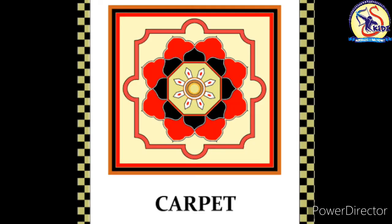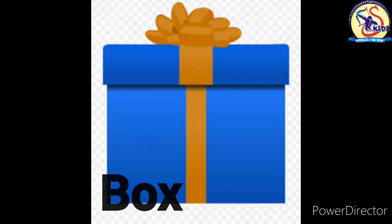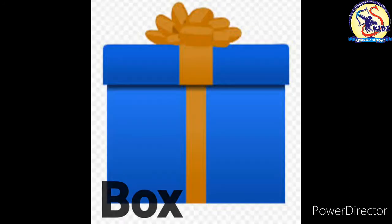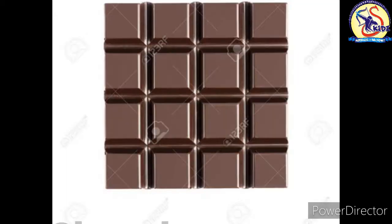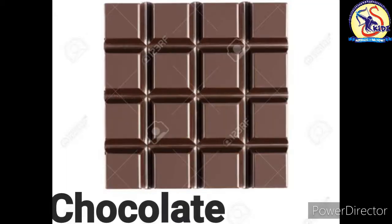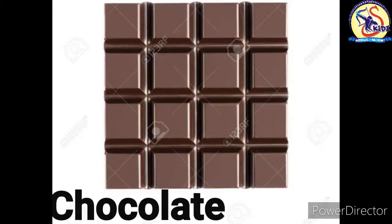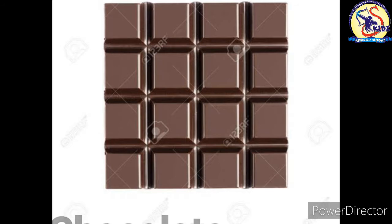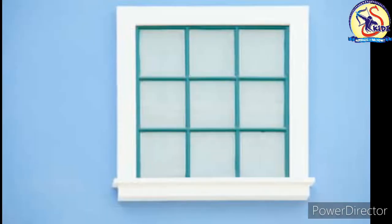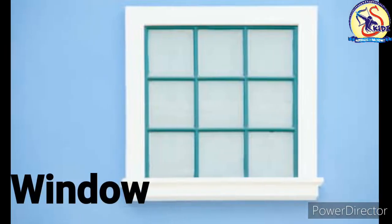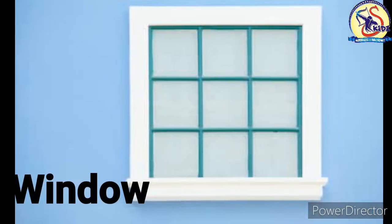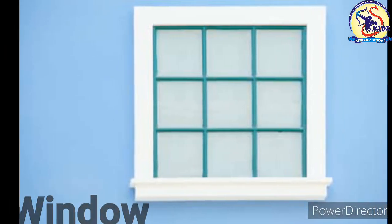This is a carpet and it is of square shape. This is a box and it is of square shape. This is chocolate and it is of square shape. This is a window and it is of square shape.